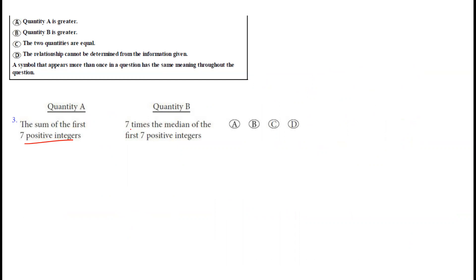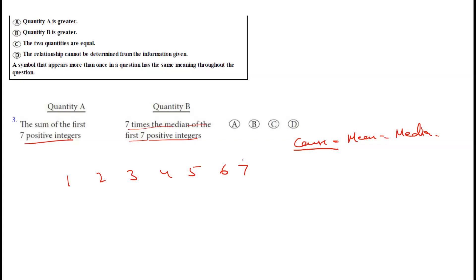Question three: the sum of the first seven positive integers versus seven times the median of those seven positive integers. The first seven positive integers are 1, 2, 3, 4, 5, 6, 7 — consecutive numbers. With consecutive numbers, mean equals median. The median position is (7 + 1) / 2 = 4th, so the median is 4.